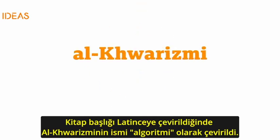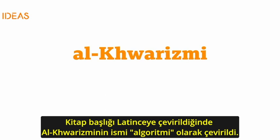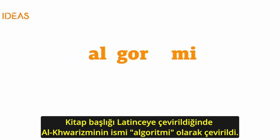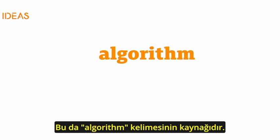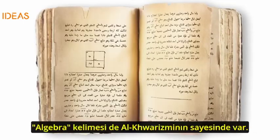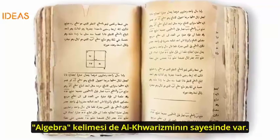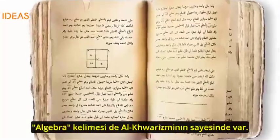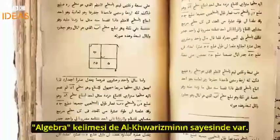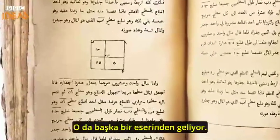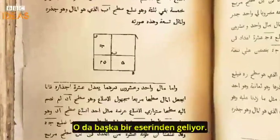Al-Khawarizmi's name, when Latinised in the title of the book, became Algoritmi, and this is the origin of the word algorithm. We also have al-Khawarizmi to thank for the word algebra, which comes from another of his works.